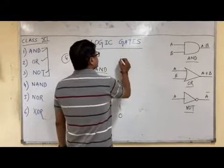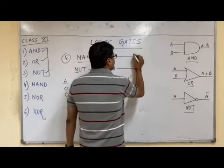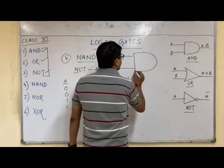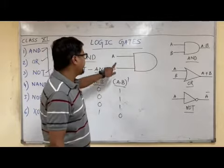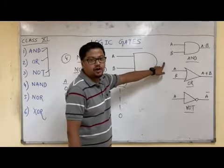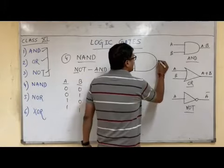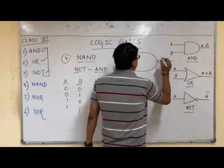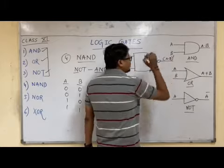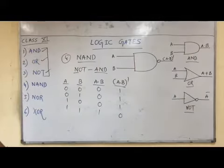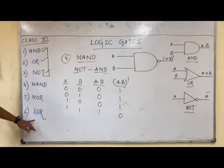The circuit diagram of NAND is easy. We draw the AND gate with inputs A and B, and just add a circle in front of the output. The output becomes A dot B whole complement, because we are applying NOT. These three — AND, OR, NOT — are the basic gates; NAND and NOR are the special gates.